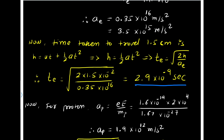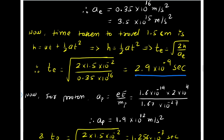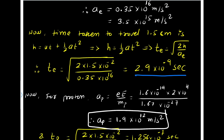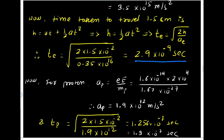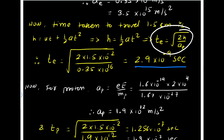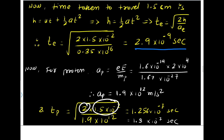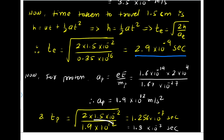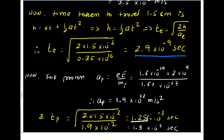For the proton, we use the same equation A = QE/M, but with the charge and mass of the proton. Putting in all the data, we get the acceleration of the proton as 1.9×10¹² meter per second squared. Using the same equation T = √(2H/Aₚ), where H is the distance the proton has to travel and Aₚ is the acceleration of the proton, we find the proton will take 1.256×10⁻⁷, that is approximately 1.3×10⁻⁷ seconds.